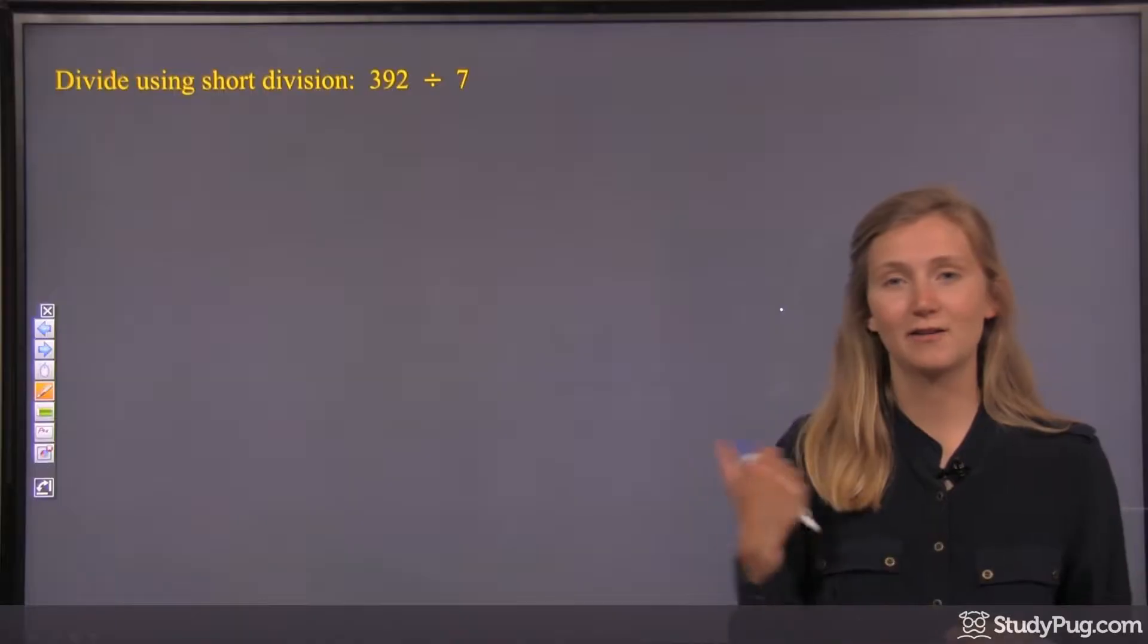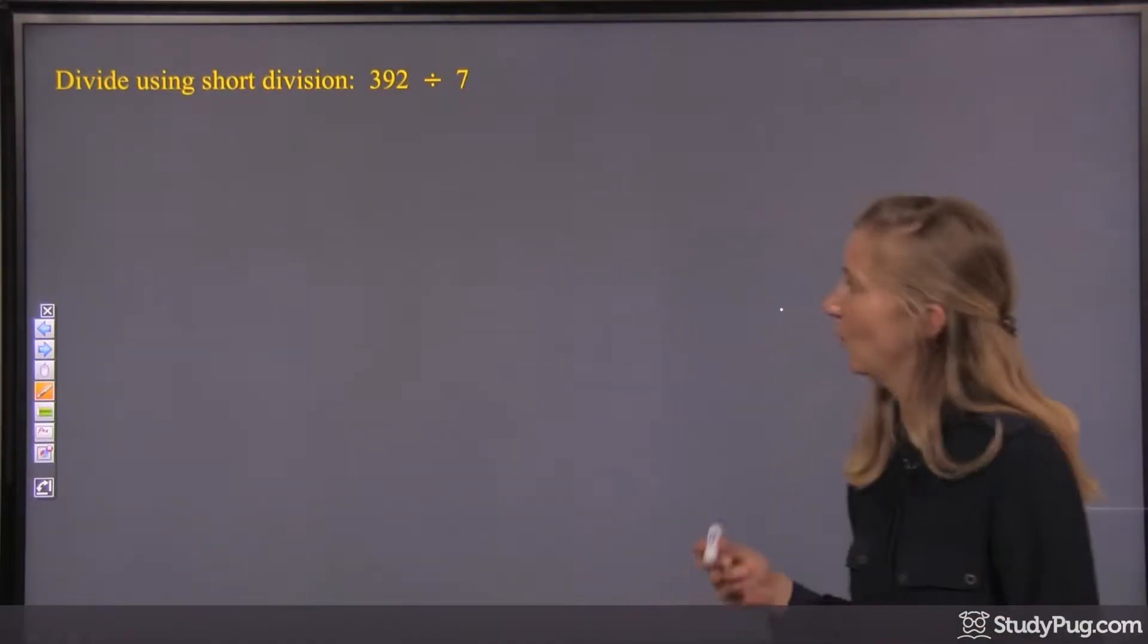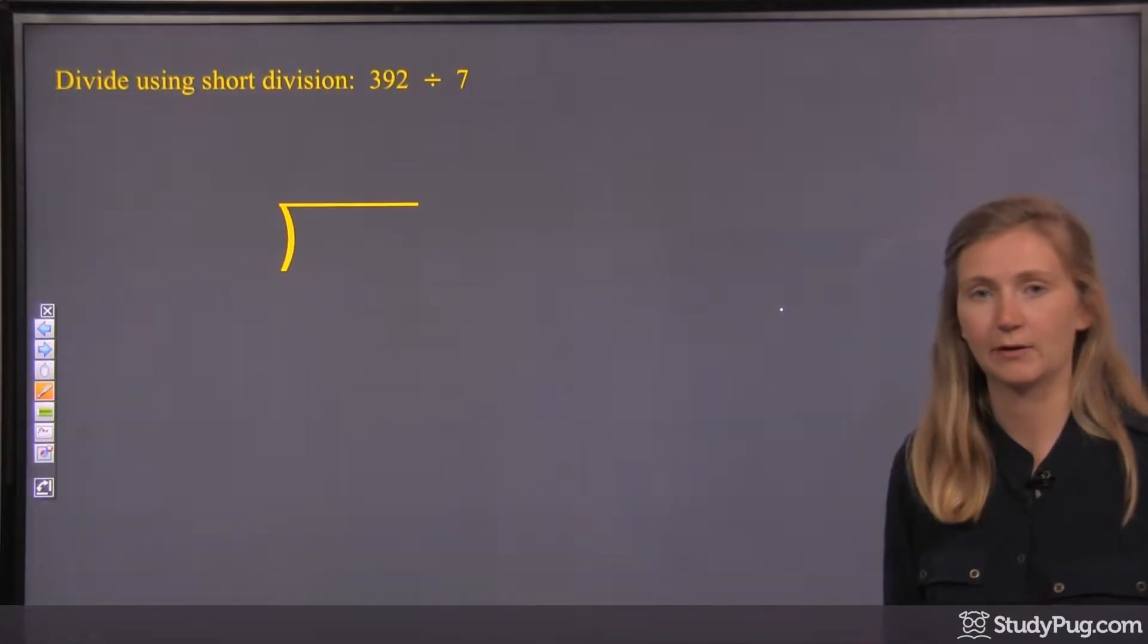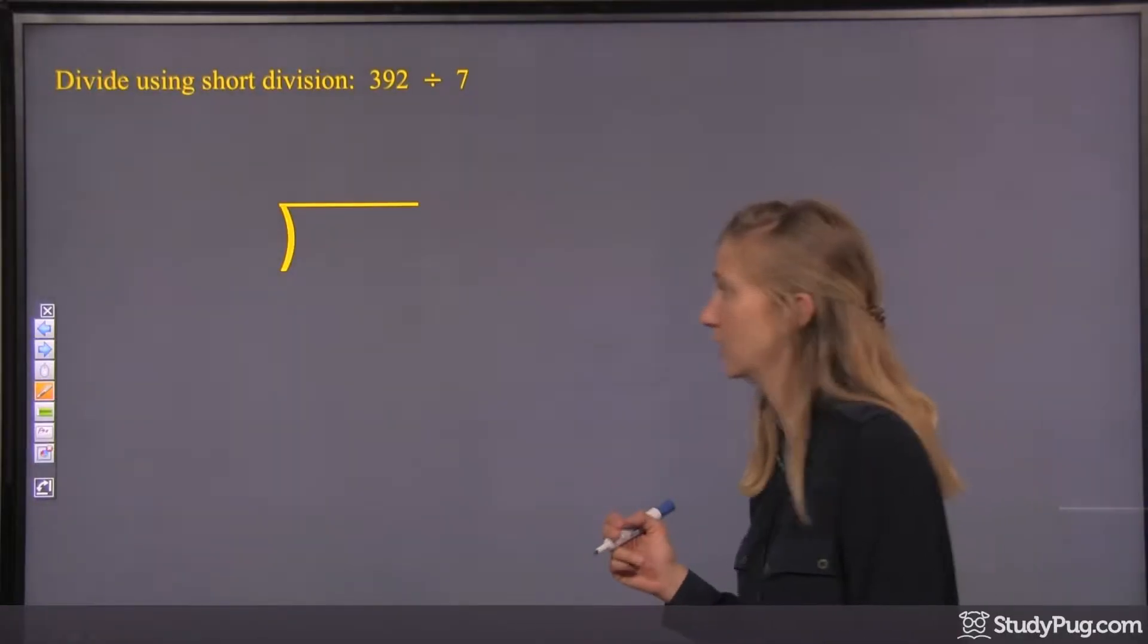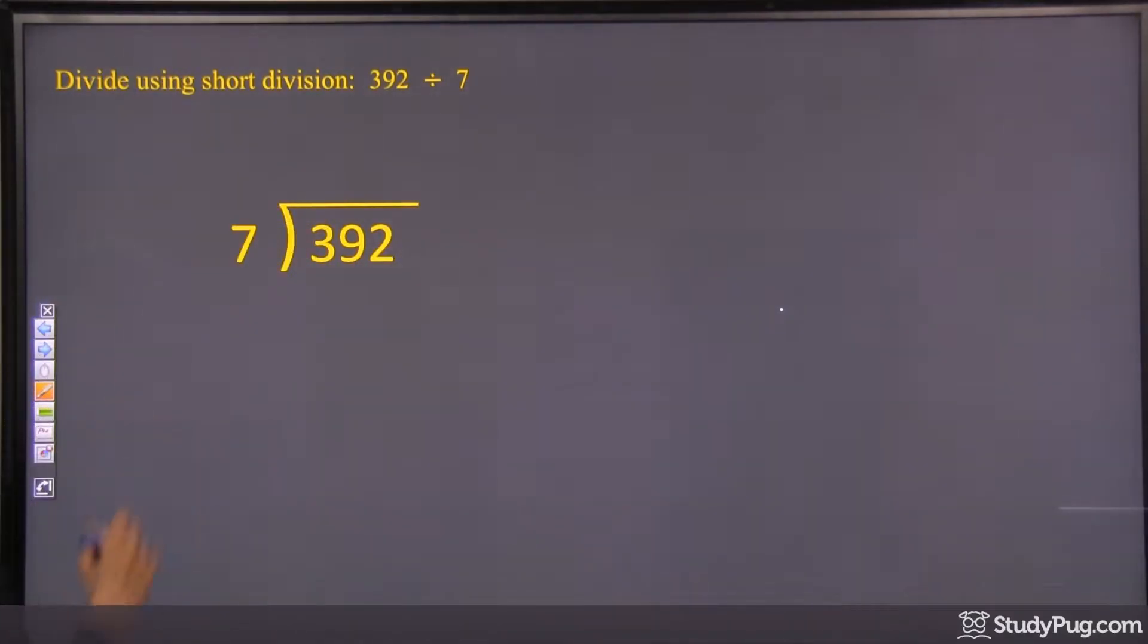Divide using short division, 392 divided by 7. Okay, so remember in short division we set up the same box as we used in our long division. And our dividend goes in there, and our divisor goes out there.